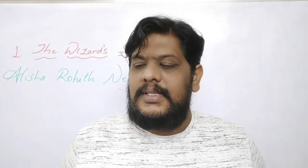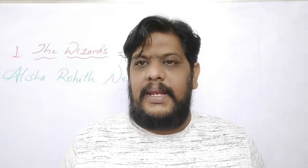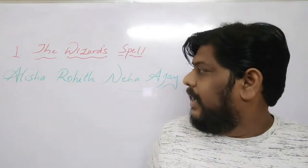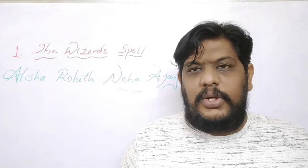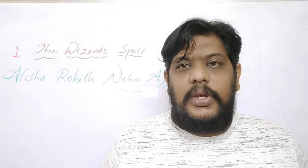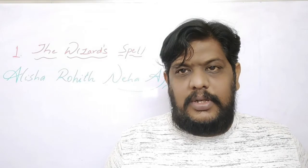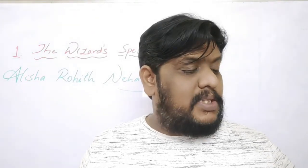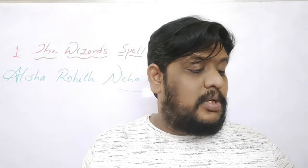Good morning children, today we are going to see the lesson called 'The Wizard's Spell.' The story has four major characters: Alicia, Rohit, Neha, and Ajay. Open your textbooks and follow along as I read the paragraphs. Alicia, Rohit, Neha, and Ajay were walking back from their school.